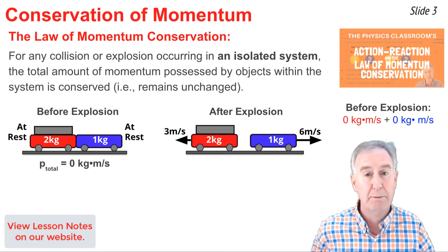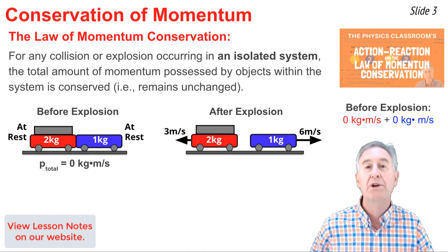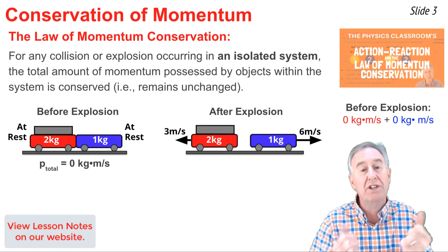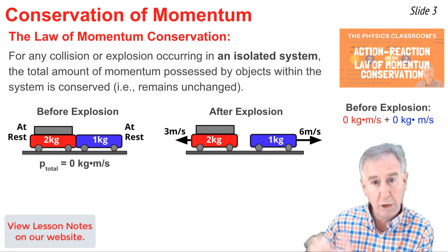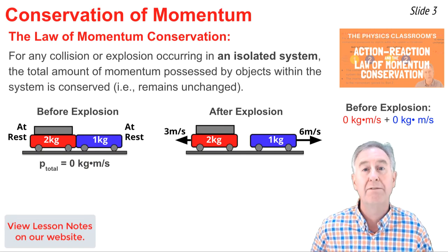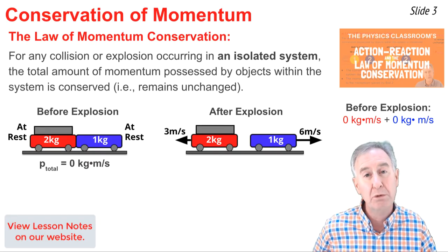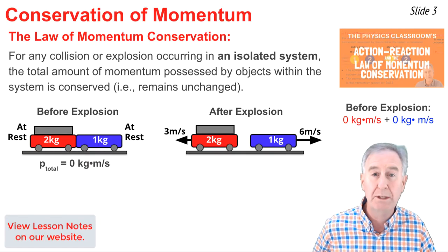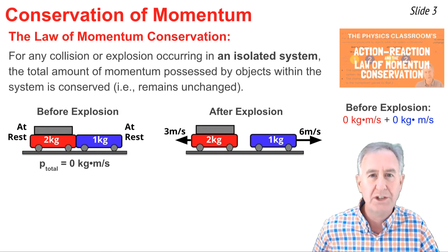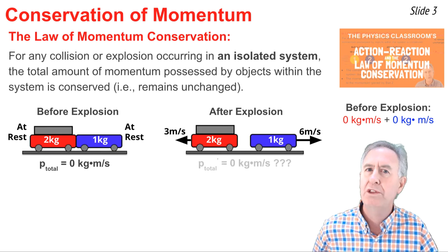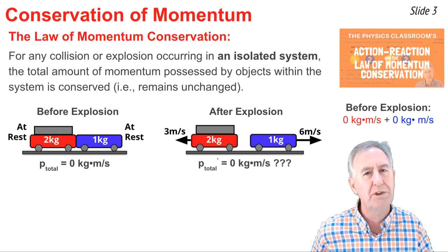The red cart is equipped with a spring-loaded plunger, which when released, pushes the two carts in opposite directions. That causes the red cart to have a velocity of 3 meters per second to the left, and the blue cart a velocity of 6 meters per second to the right. Since each object now has momentum, how could the total momentum be equal to zero?